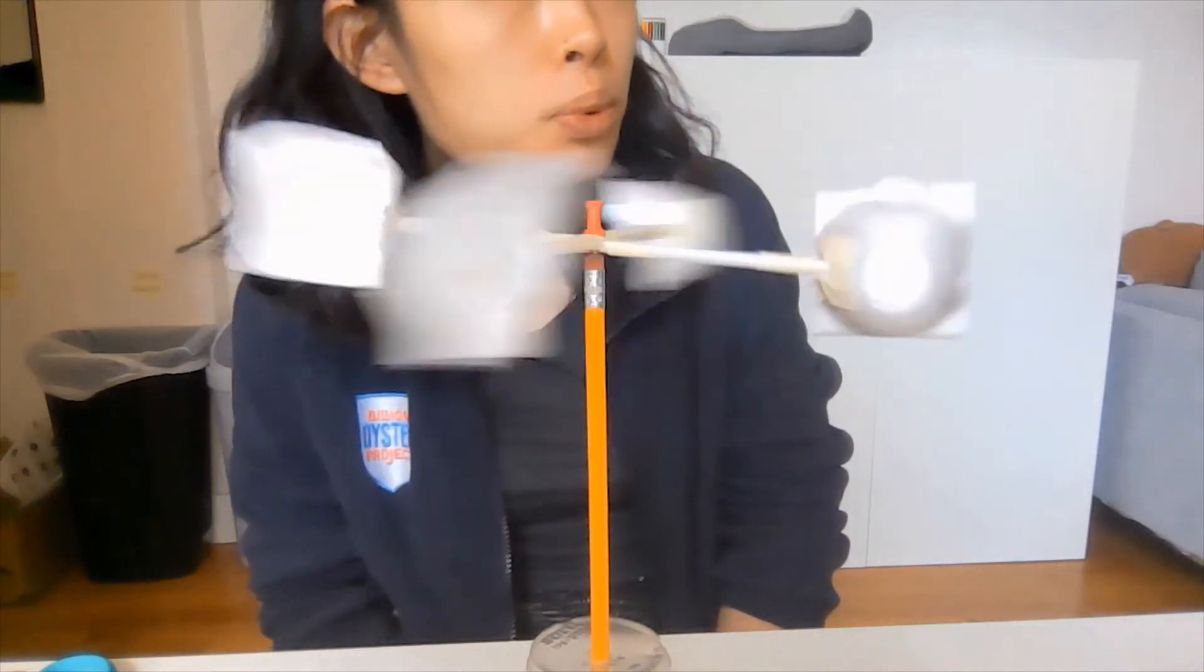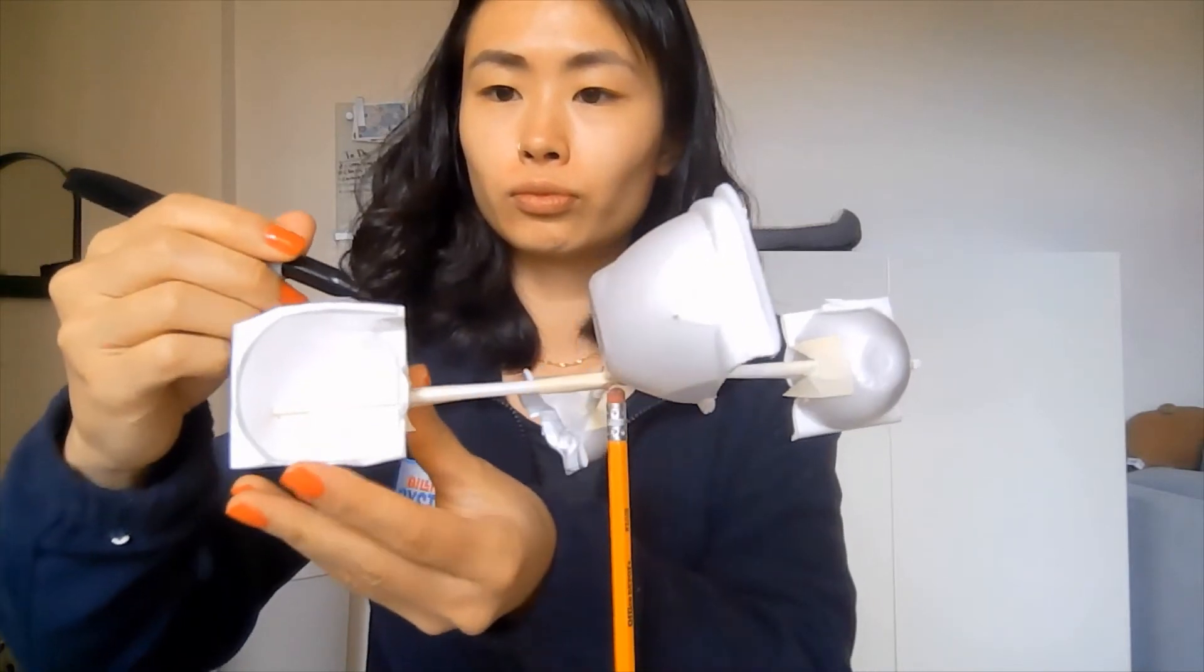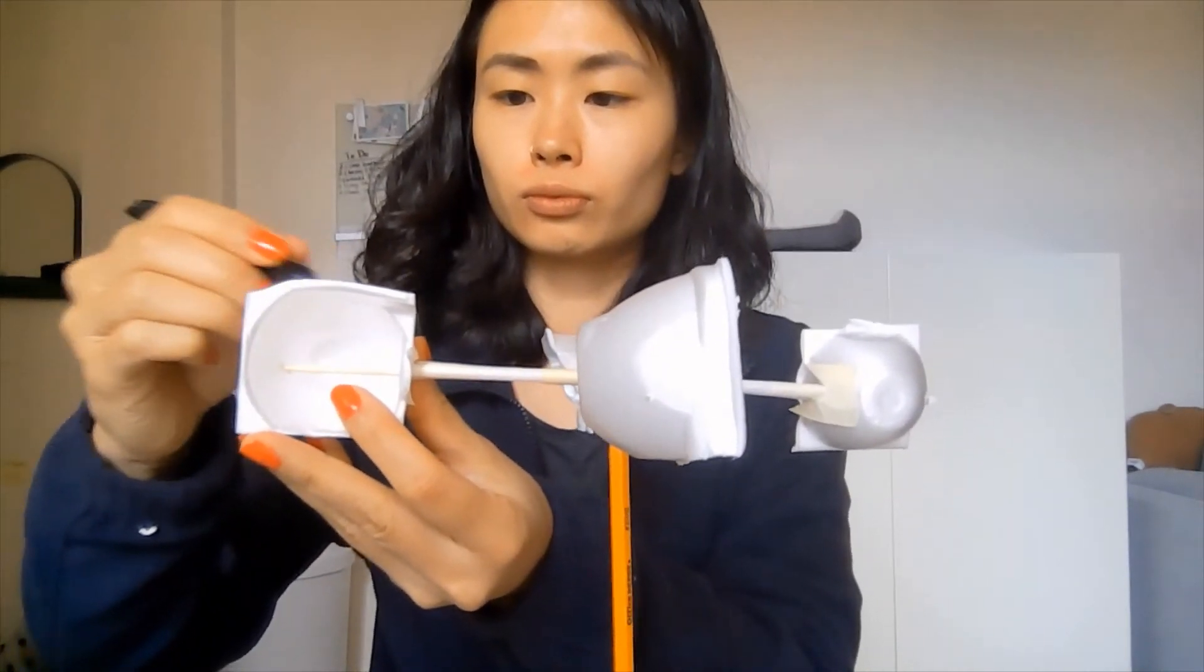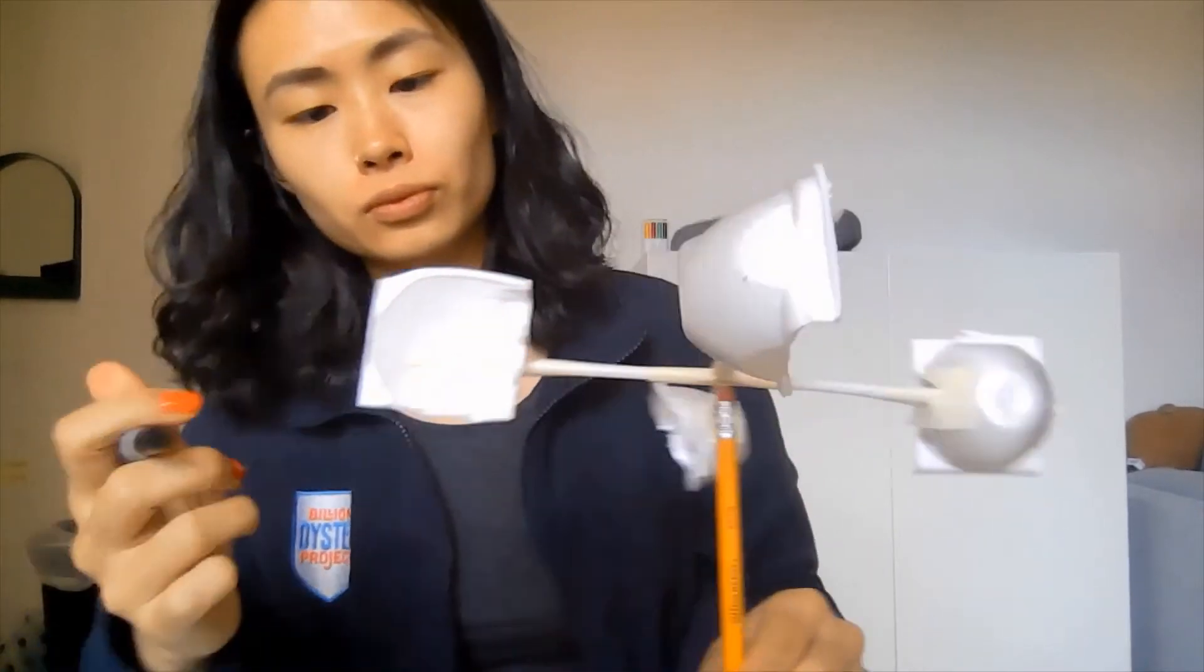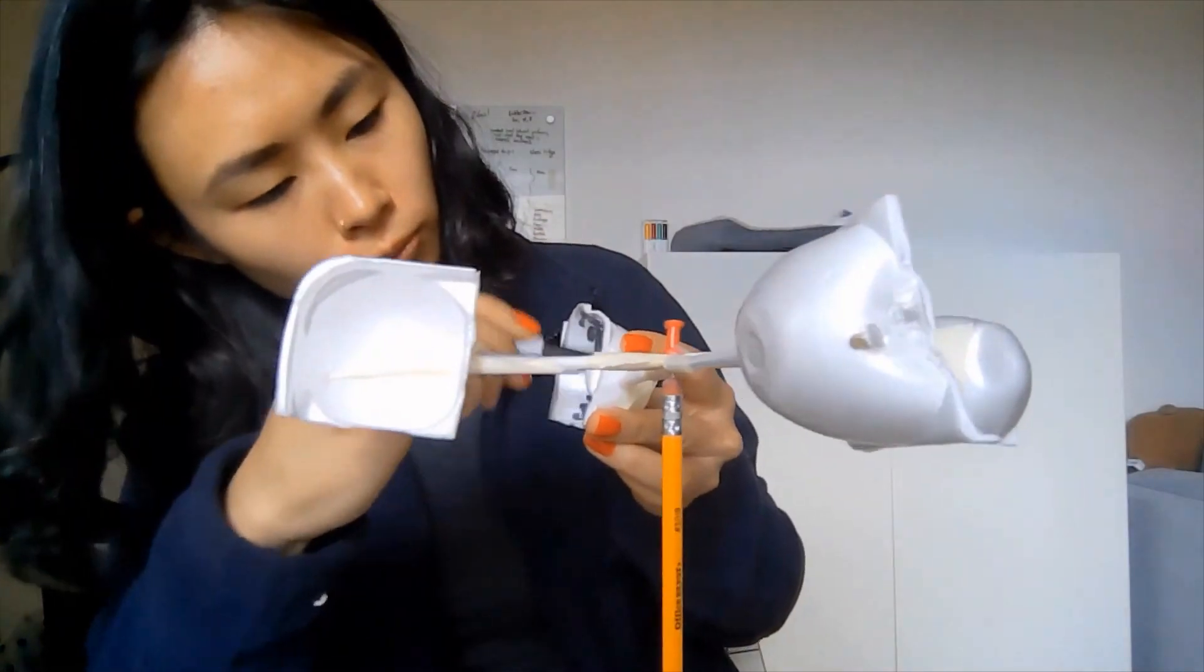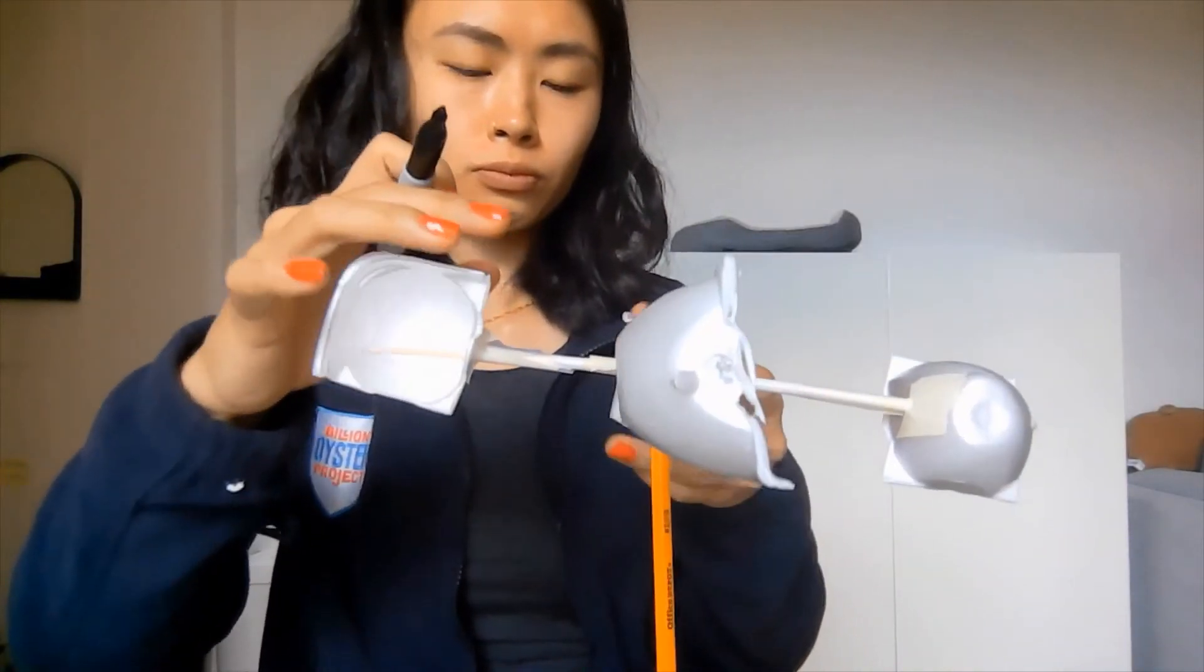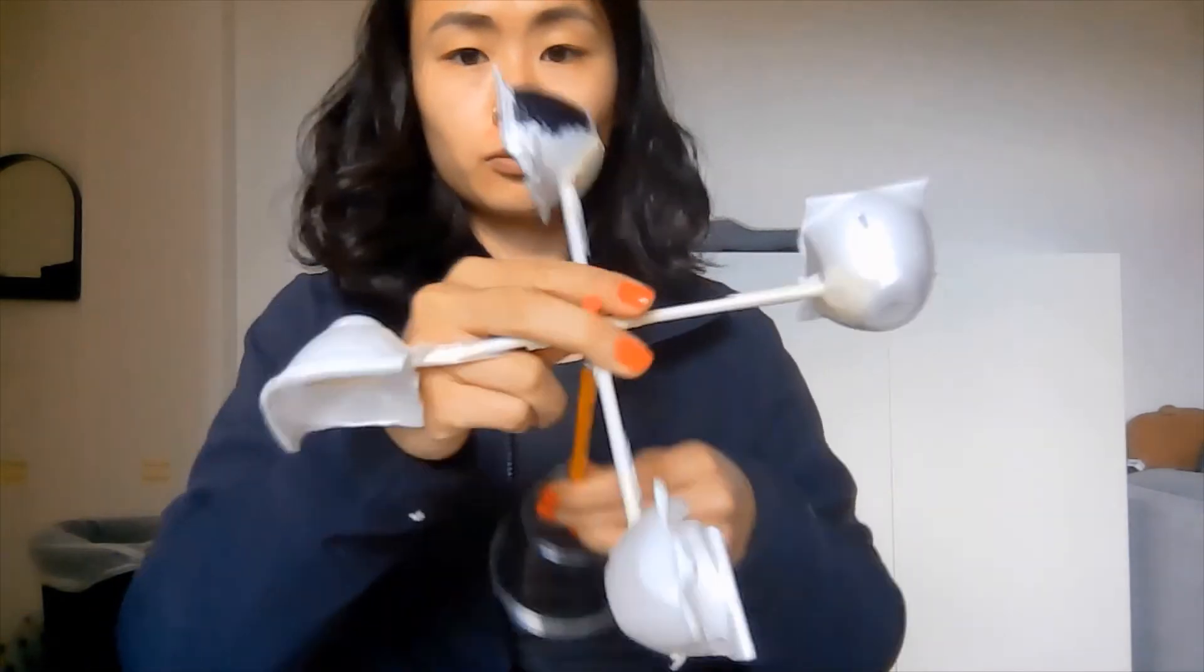If or when you decide to take your anemometer outside for a test run, you may find that it is hard to count the number of revolutions the cups spin since they are more or less identical. If you are having a hard time keeping track of the number of revolutions the egg carton cups make under fast wind, you can color one of the cups with a permanent marker to make it easier to spot with your eye when it's spinning really fast. It should look something like this.